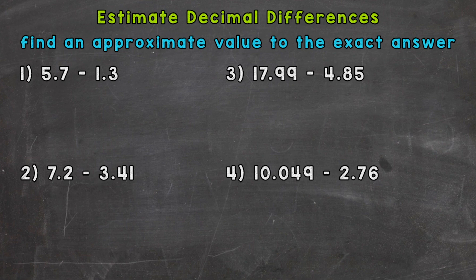When we estimate, we find an approximate value to the exact answer. For each of these problems, we're going to round each decimal to the nearest whole number and then subtract to find our estimate. Then we'll compare to the exact answer.